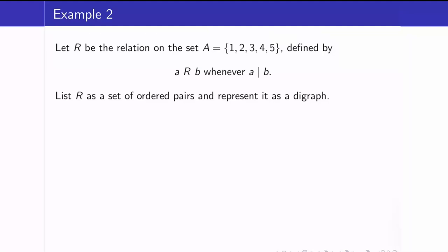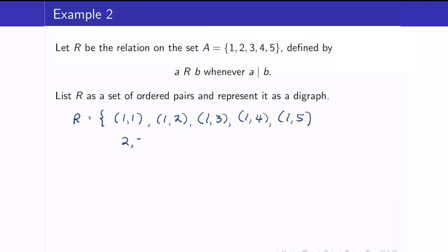Suppose we have the relation R on the set A, where A = {1, 2, 3, 4, 5}, and our relation is given by: A is related to B whenever A divides B. Let me first write down the elements of R as ordered pairs. We have 1 divides everything: (1,1) up to (1,5). For 2, we have (2,2) and (2,4). For 3, (3,3); for 4, (4,4); and for 5, (5,5). So this is our relation.